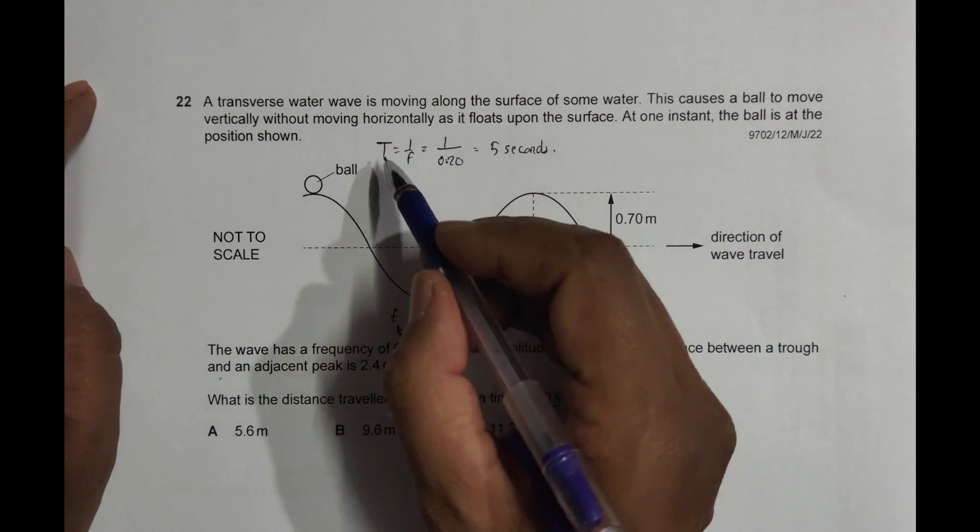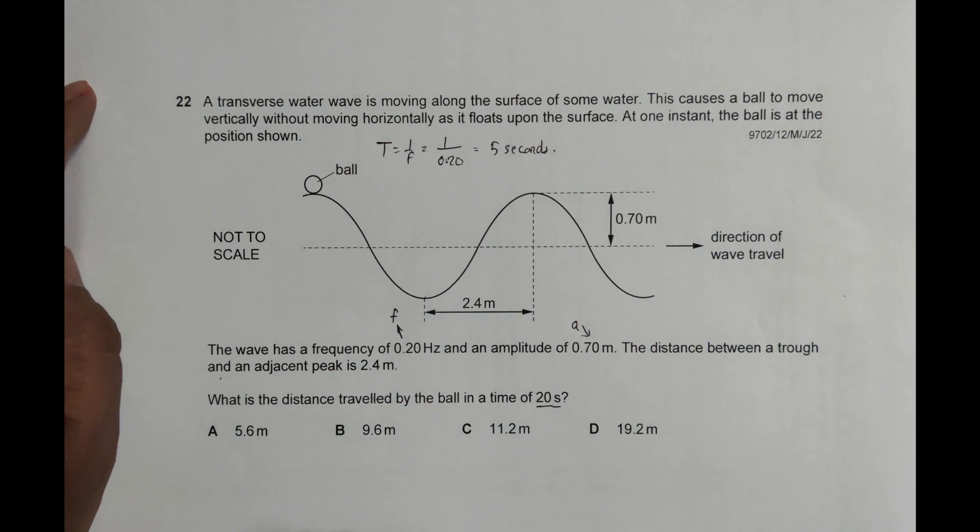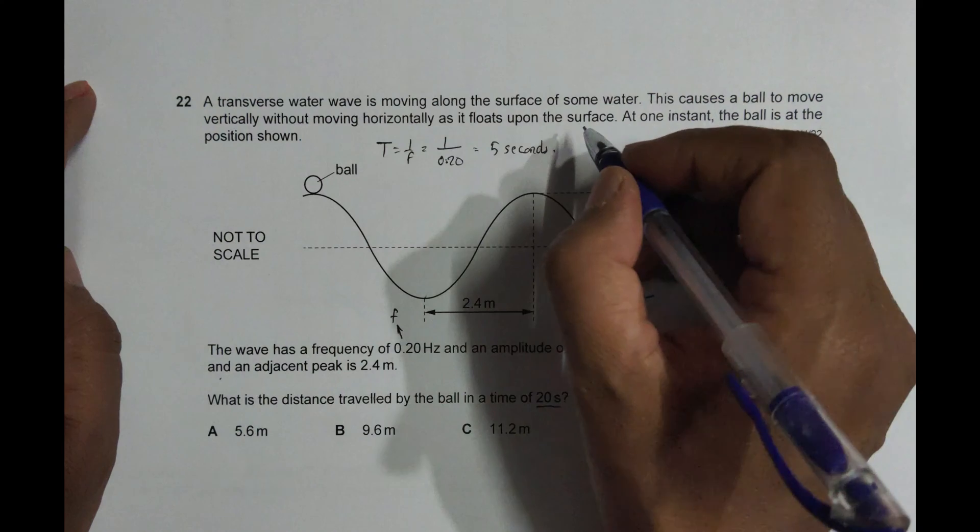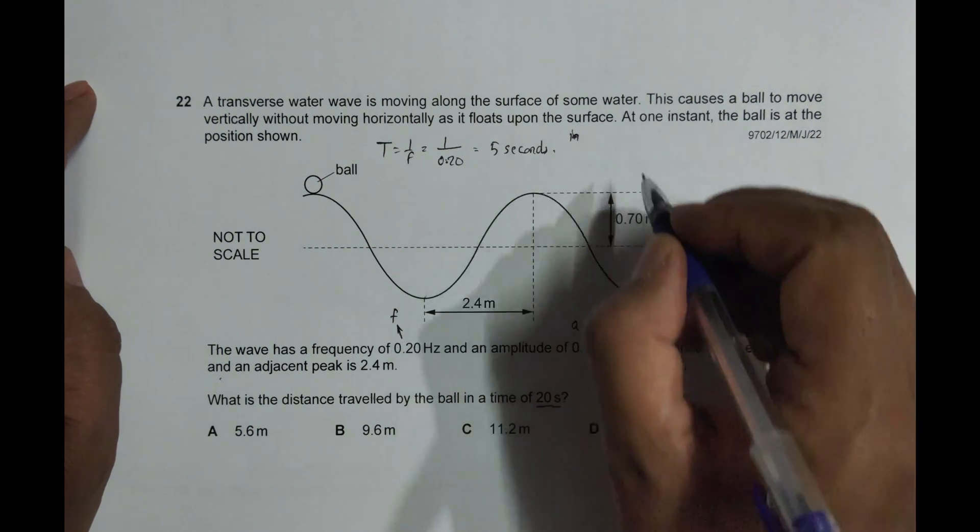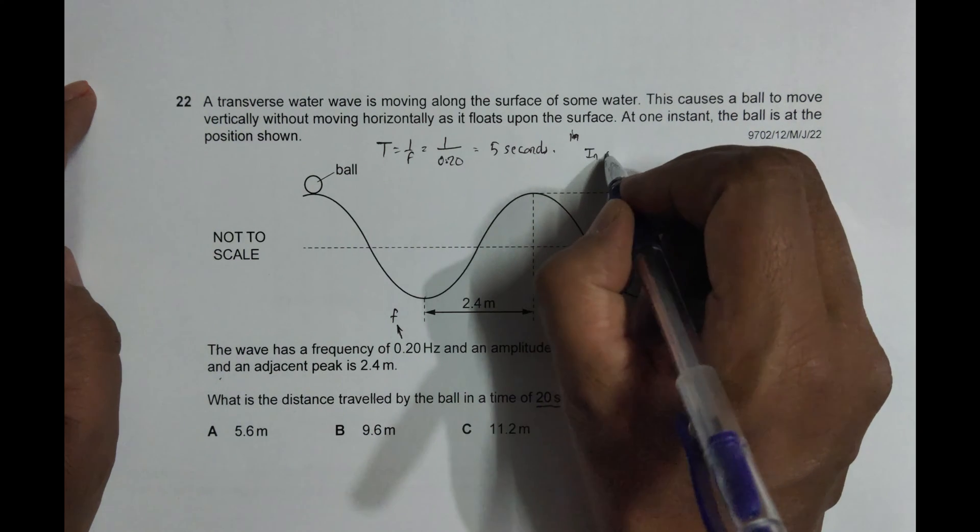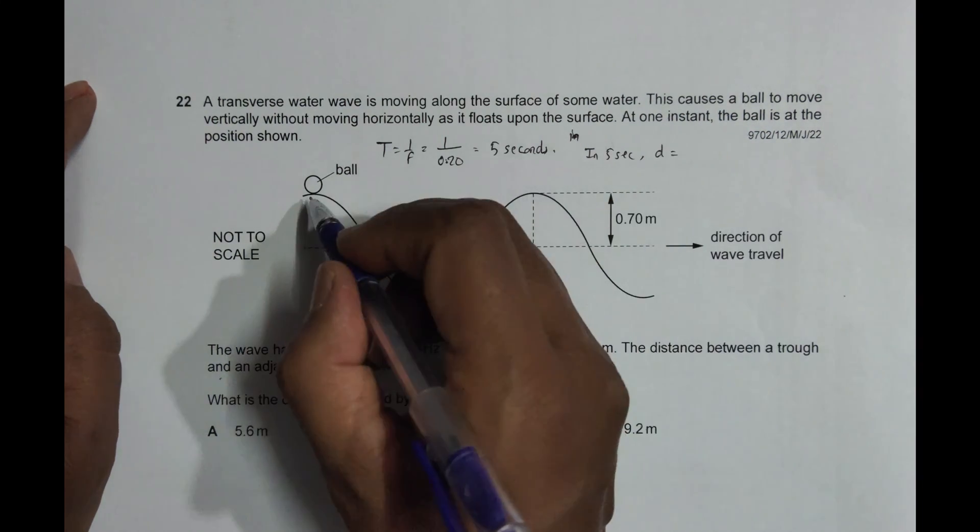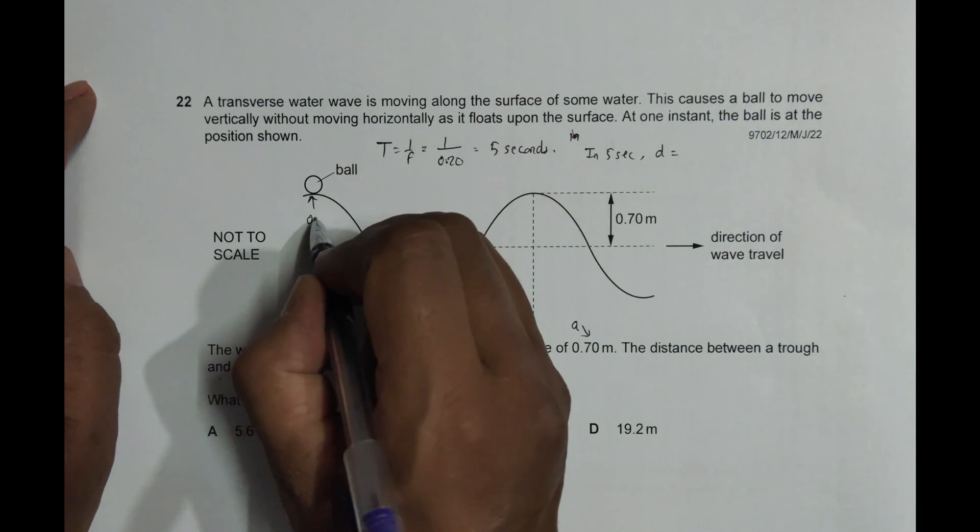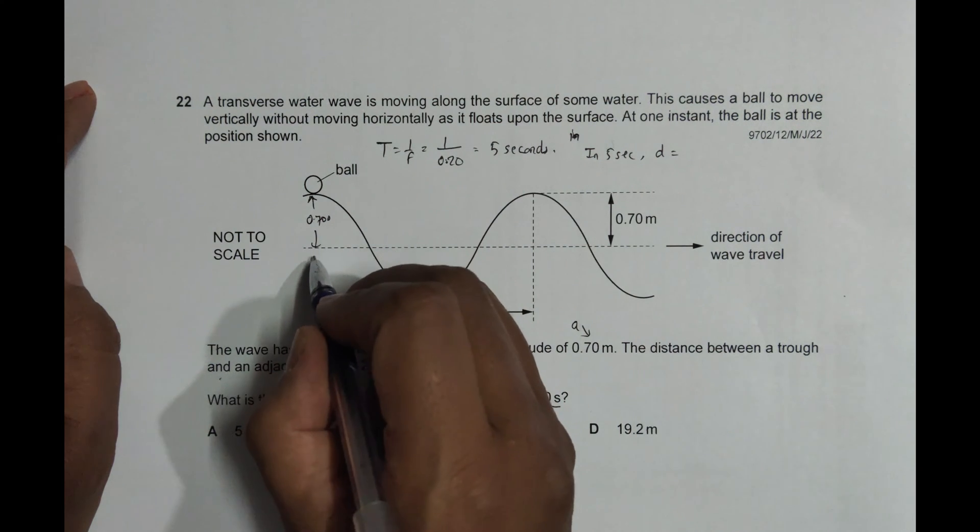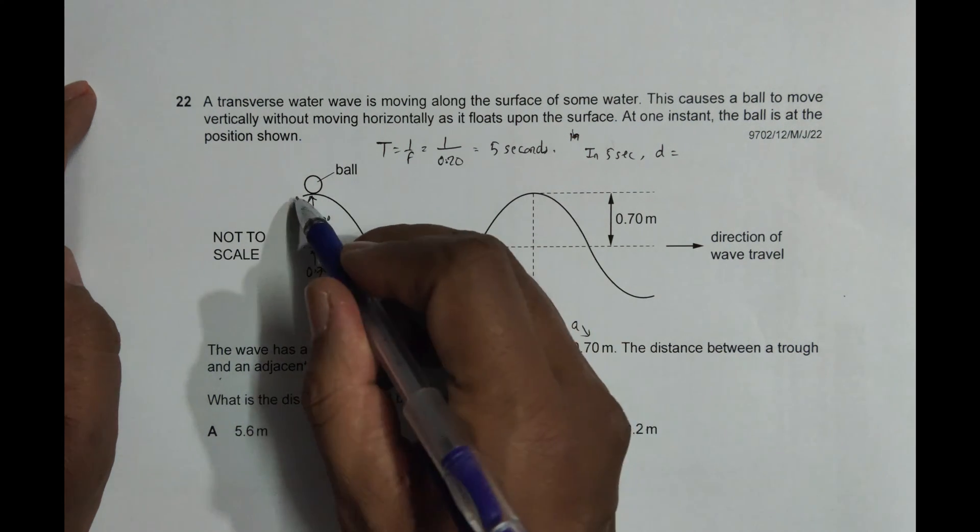That means it moves once like this in five seconds. So what I can say is, in five seconds it will move through a distance from here to here. It will be 0.70, then 0.70, and this also should be equal to 0.70 like this. So once it moves in one time period...